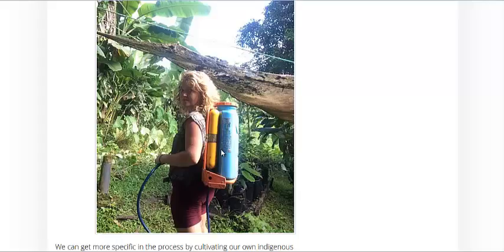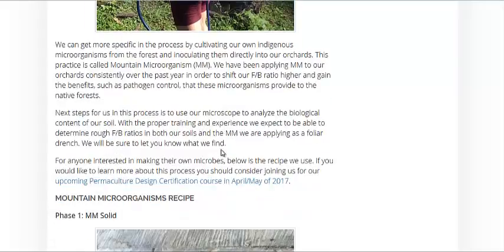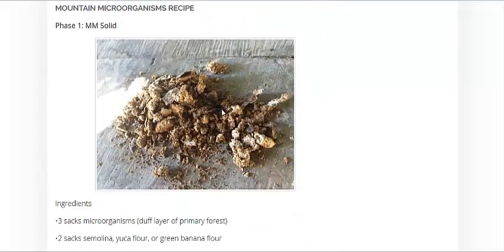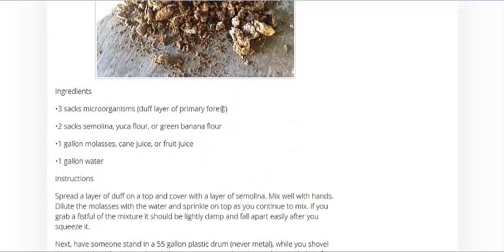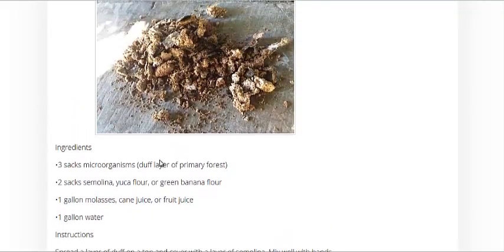But where do you find this fungi and bacteria? Well, what they do is go into the forest and literally dig up some of the dirt — some of the duff layer, as they call it. They are in Costa Rica, by the way, right by virgin rainforest. They put a lot of this duff layer with some yucca flower or some green banana flower — some sort of feed for the fungi and bacteria — as well as sugar, molasses in this case, because it really helps feed bacterial life.